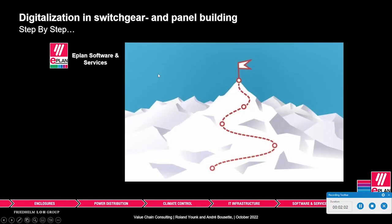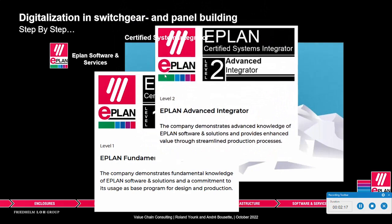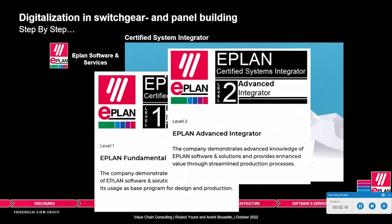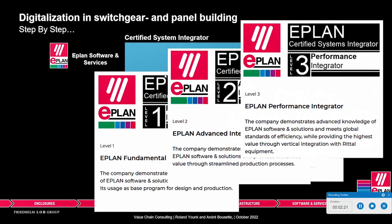Let's take a look at how we can get there, because obviously you're not going to get there in one single step. So we found a way to actually help you as a customer optimize the usage of ePlan. If we look at this Certified System Integrator, we audit you as a customer, and we have three different levels. Let me explain what these three levels are.